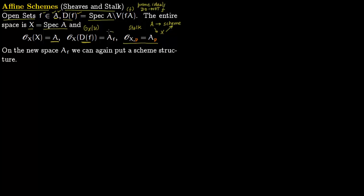Notice that you have a new ring A(F). If you rename this as B, you can do the entire procedure again starting with ring B instead of A. So on the new space A(F) you can again put a scheme structure. You can keep putting schemes on schemes because every time you localize you get a new ring. So this was an affine scheme.